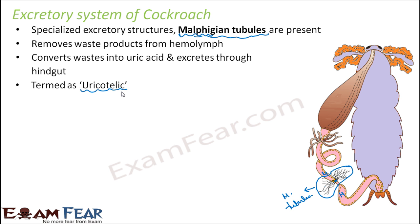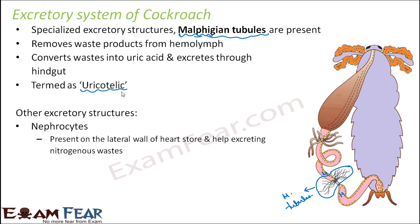Cockroaches also have uricose glands which can synthesize uric acid, present near the mushroom gland in the male reproductive system. Other than the Malpighian tubules, cockroaches can also excrete through nephrocytes, which are present on the lateral wall of the heart to store and help in excreting nitrogenous wastes. Uricose glands help synthesize uric acid and are present in the male reproductive system. Through the cuticle — the waxy outermost layer — some waste products are also thrown out. All these structures together help a cockroach to get rid of waste materials.